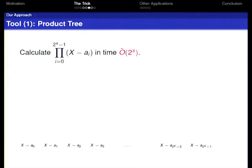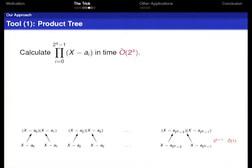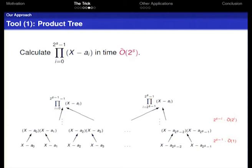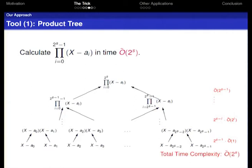To construct the product tree, we are given 2^s small linear factors. We group them by pairs, calculate the product of each pair at the leaf level, giving 2^(s-1) pairs. Then we group those by twos again, computing the product of each pair, repeating level by level. At each level, there are half as many polynomials but each has twice the degree. Therefore, the total complexity is almost the same at each level, and over s levels the total complexity is quasi-linear in 2^s.